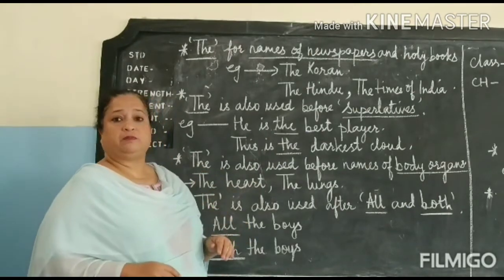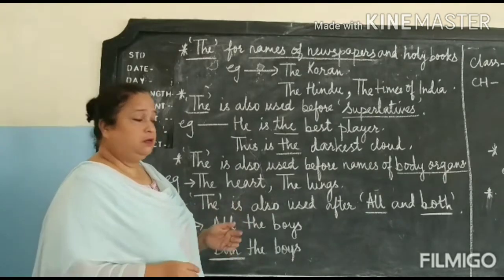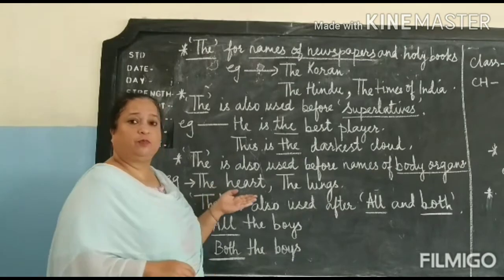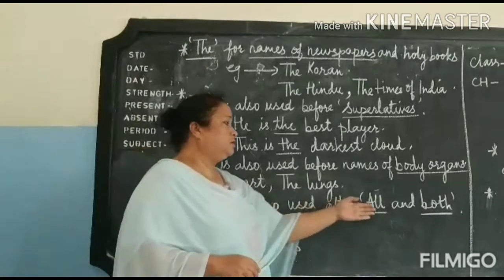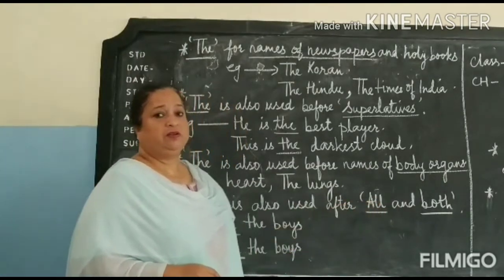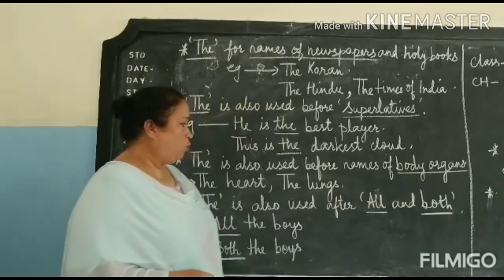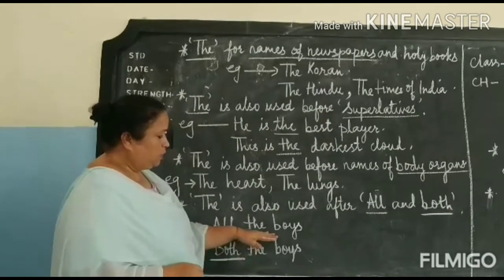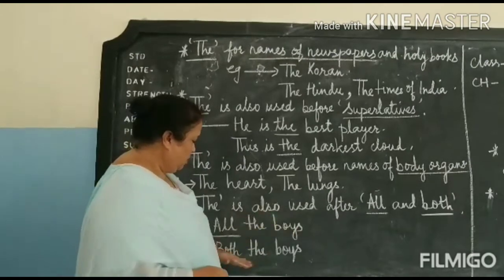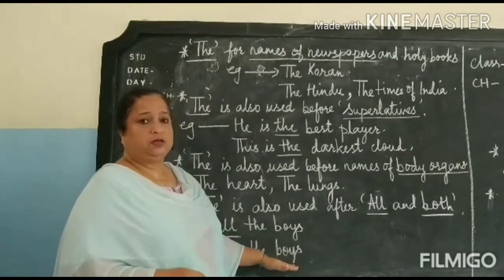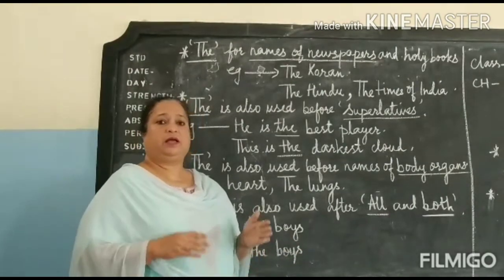'The' is also used for the names of body organs: the heart, the lungs, the kidney. Lastly, 'the' is also used after the words 'all' and 'both'. When you write a sentence using 'all' or 'both', after them we use the article 'the'. For example: 'all the boys,' 'both the boys.' I hope children that in this chapter you have understood the uses of the definite article 'the'.